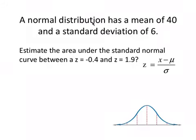So our normal distribution, that means a bell-shaped curve, our mean is 40, our standard deviation is 6. Estimate the area under a standard normal curve with a z-score of negative 0.4 to a z-score of 1.9.